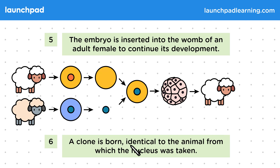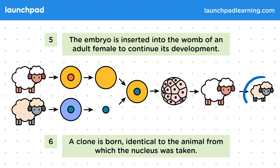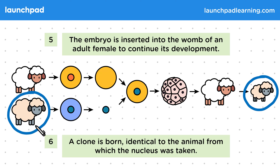A clone is born identical to the animal from which the nucleus was taken. As you can clearly see in the diagram, this lamb looks exactly the same as this sheep here, because it is genetically identical to that sheep.